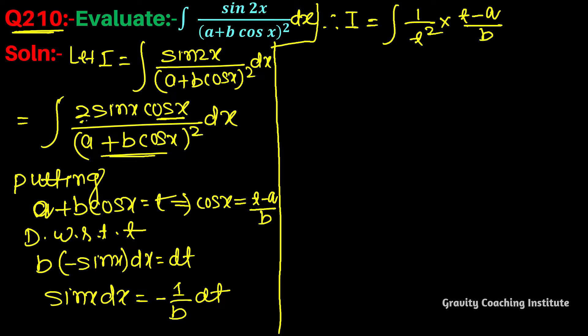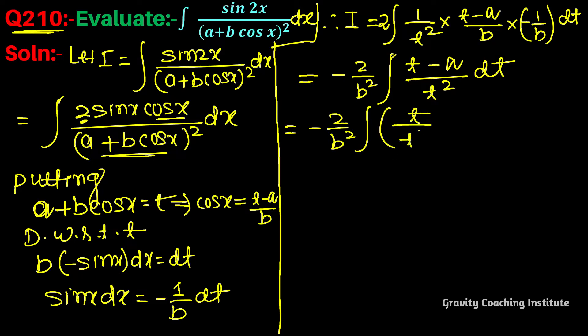Rewriting the integration with sin x dx value as minus 1 by b dt, we get minus 2 by b. And then we will split the fraction: this is t by t square minus a by t square.